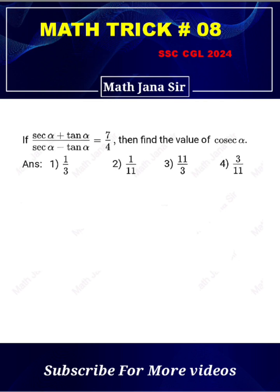Hello friends, in this question if I tell you the value of (sec α + tan α) / (sec α - tan α) = 7/4, then find the value of cosec α. The answer will be 11/3. You will be surprised but it is true.